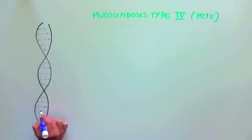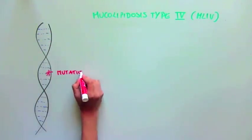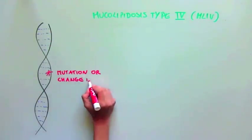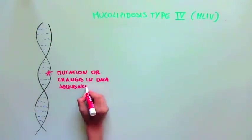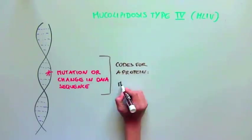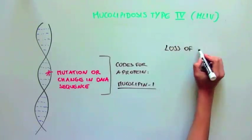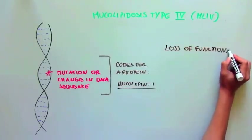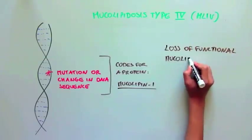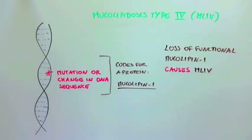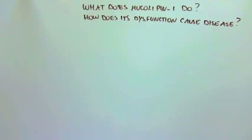ML4 is caused by a mutation, or a change in the DNA sequence that codes for a protein called mucolipin-1. The mutation makes a non-functional mucolipin-1 protein, which causes ML4 disease. So what does mucolipin-1 do, and how does its dysfunction cause this disease?